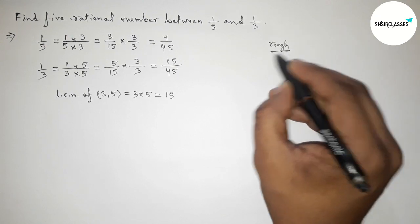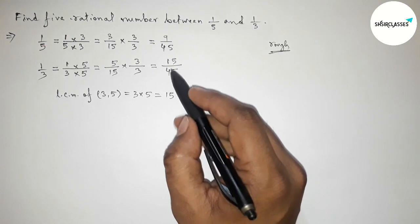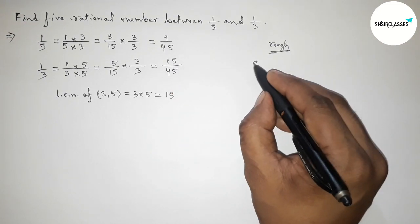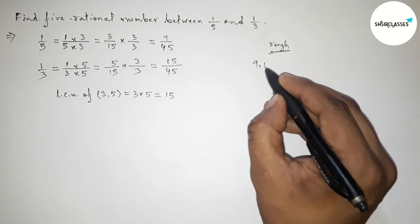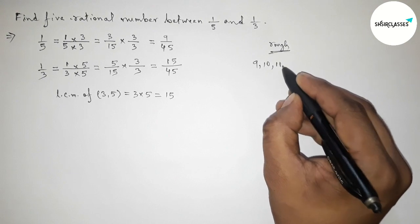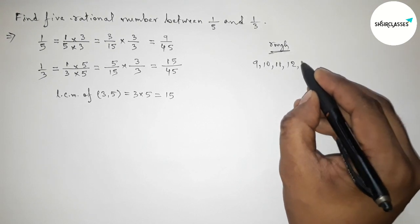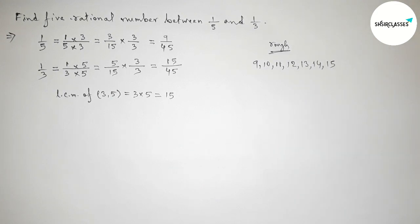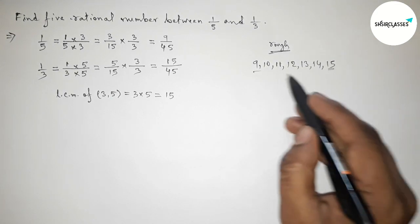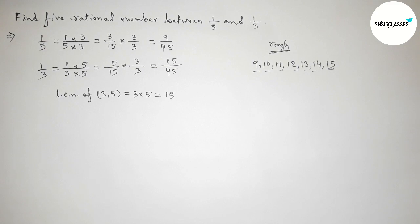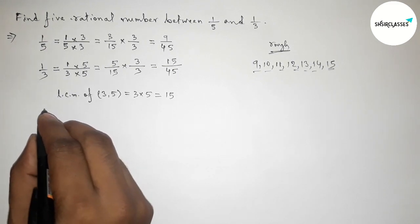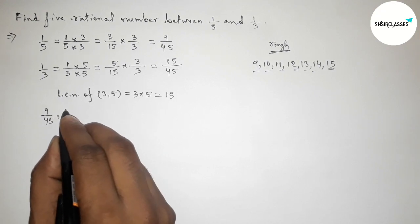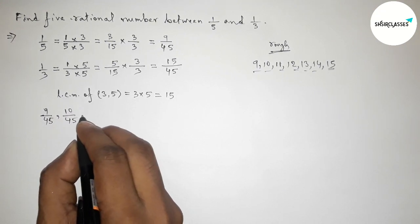Now, since the denominators are equal, between 9 and 15 we can find 5 integers. Using these 5 integers, we can form 5 rational numbers. Now let's write down all the rational numbers.